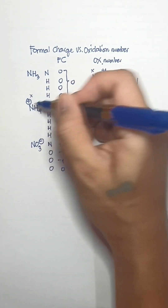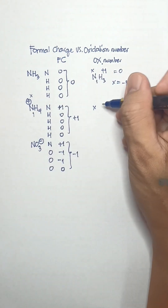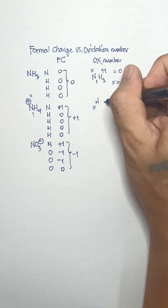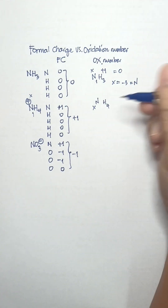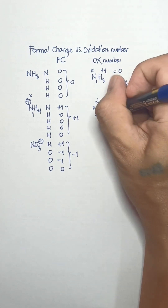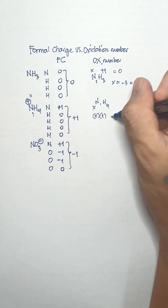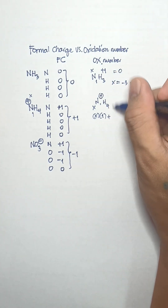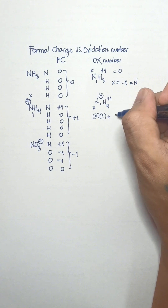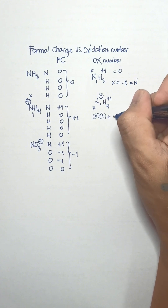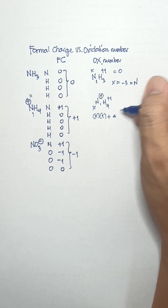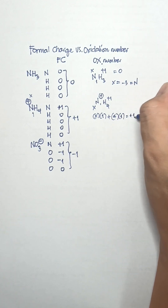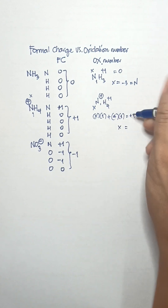For ammonium ion, nitrogen has one atom assigned oxidation number x times 1, plus the oxidation number of hydrogen times 4. This gives the equation: x plus 4 times 1 equals positive 1, which is the charge of ammonium ion. Solving for x gives negative 3, so the oxidation number of nitrogen in ammonium ion is negative 3.